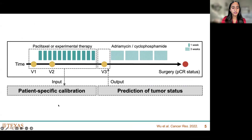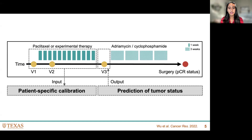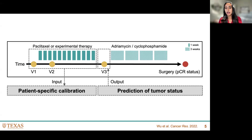Patients received imaging at visit one before starting any therapy. They then received three cycles — three weeks of treatment — of either paclitaxel or an experimental therapy, followed by imaging at visit two. After nine weeks, completing this first treatment course, they received imaging again at visit three. We use visit one and visit two to calibrate our model, and visit three as ground truth to assess prediction accuracy. Patients also received a second treatment course of 12 more weeks before surgery. We didn't run the model all the way to surgery, but we used our model predictions at visit three to predict PCR status at the time of surgery.